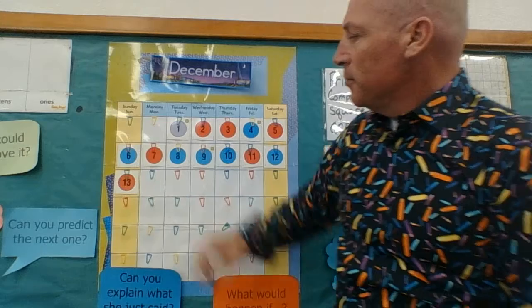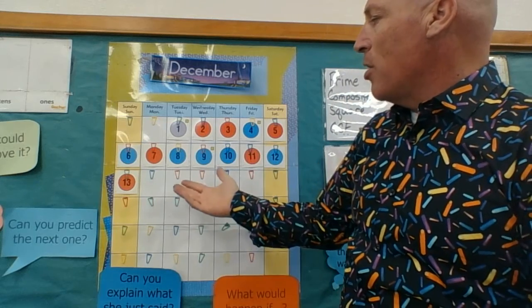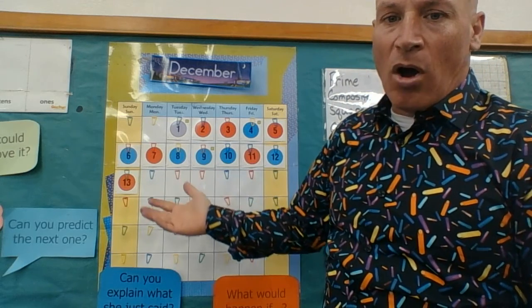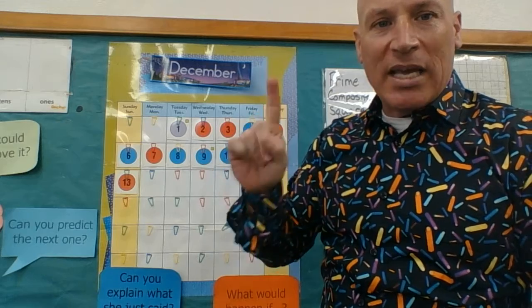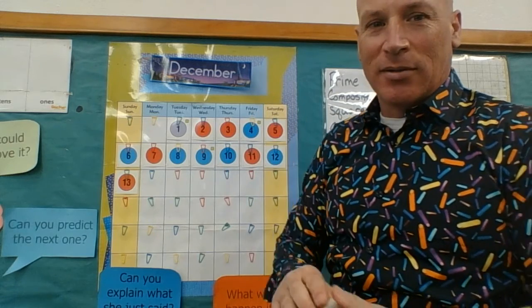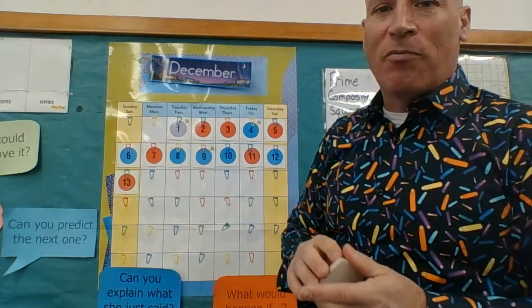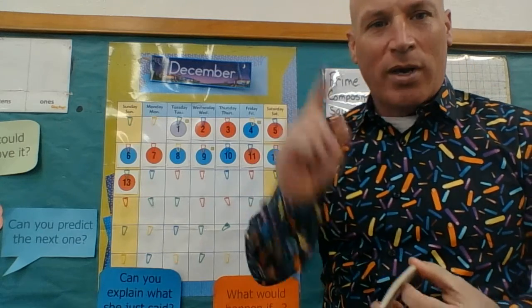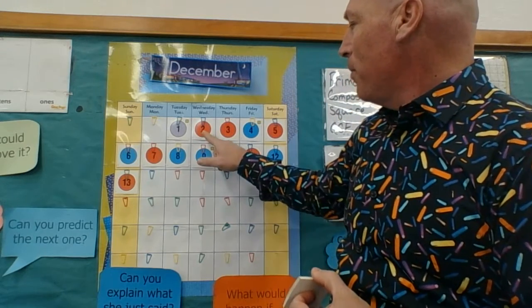But for 14, you probably know all even numbers are composite. There's only one even number that is prime. Only one of the infinite numbers of even numbers, only one is prime, and that would be two.